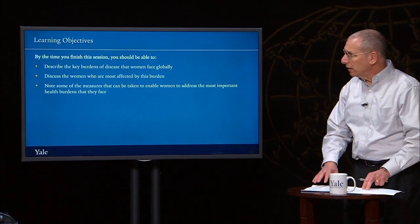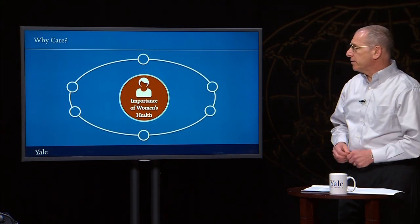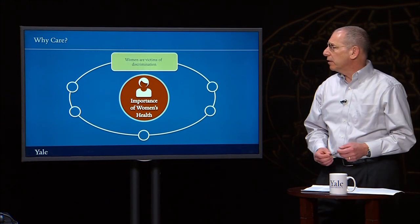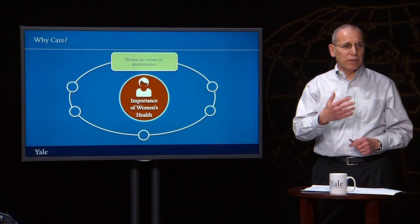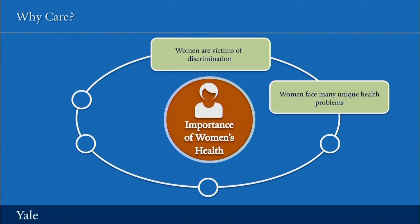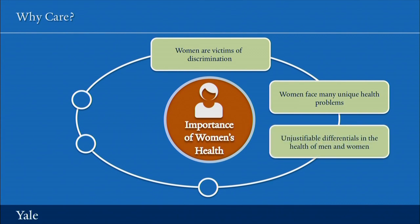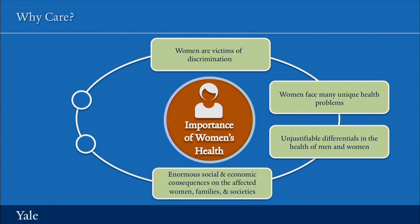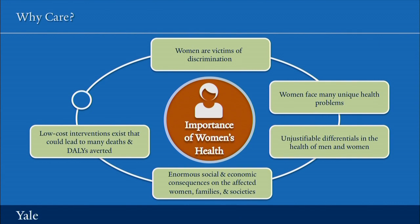All thoughtful comments. So let's look at a graphic that nicely summarizes some of these issues about why it's so important to think about the health of women as we think about global health. First, women are often victims of discrimination, which can harm their health or reduce their ability to seek health services. Women face many unique health problems, such as cervical cancer, ovarian cancer, and only they can give birth. There are often unjustifiable differentials in the health of men and women. There are enormous social and economic consequences on the affected women, families, and societies. There are low-cost interventions that could lead to many deaths and many DALYs averted, but a substantial share of these are not being used sufficiently or not taken to scale in some of the countries where they are most important.